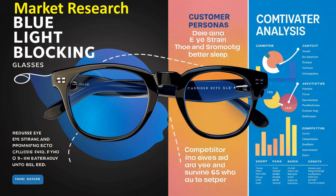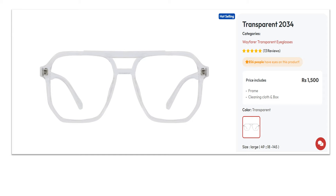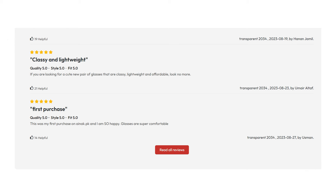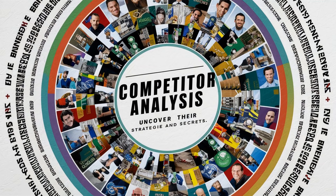Welcome to the market research section of the strategy, where you are going to set the foundation for the entire strategy. In here you're going to learn three important things. Number one, learning about your product details to understand why customers find your product attractive and how best to sell to them. Number two, creating a target audience persona to understand who your customers are and how best to target them. And number three, doing a competitor analysis to understand who your competitors are, what their weaknesses are, and how we can beat them.